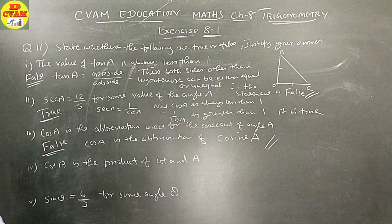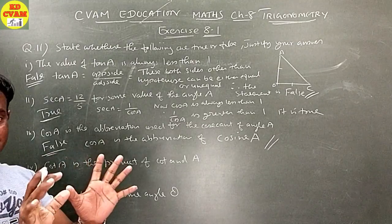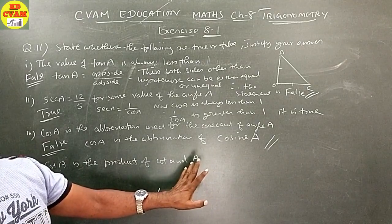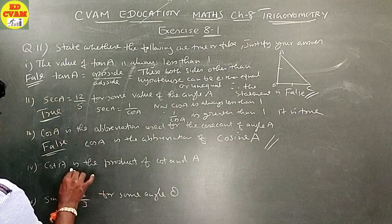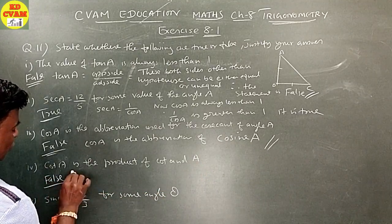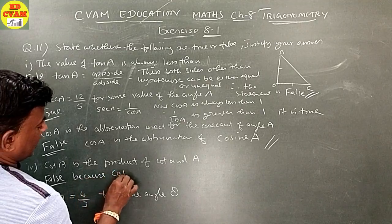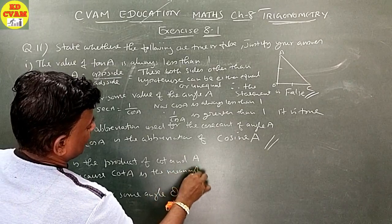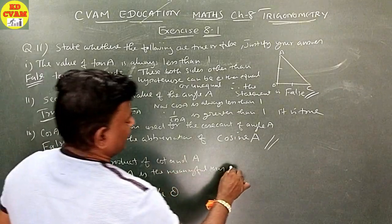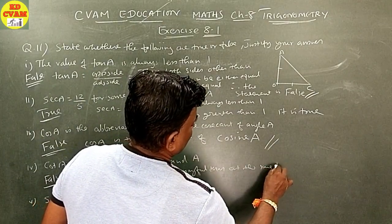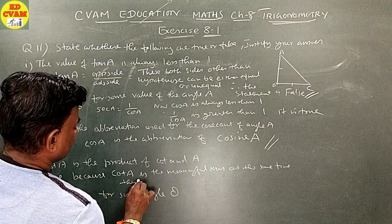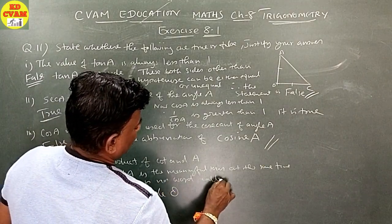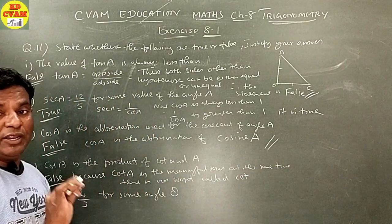Fourth: cot A is the product of cot and A. Cot A itself is a meaningful term — cot and A separately are meaningless. There is no word called cot alone. Therefore, this is false.